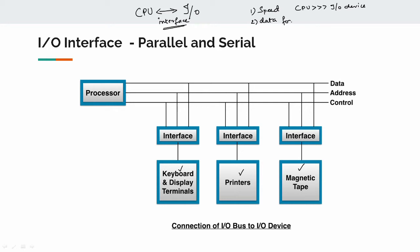The next reason is data format. Different IO devices like printers, mouse, and keyboard have different data formats, whereas the CPU data format is uniform. That is why we need an interface.